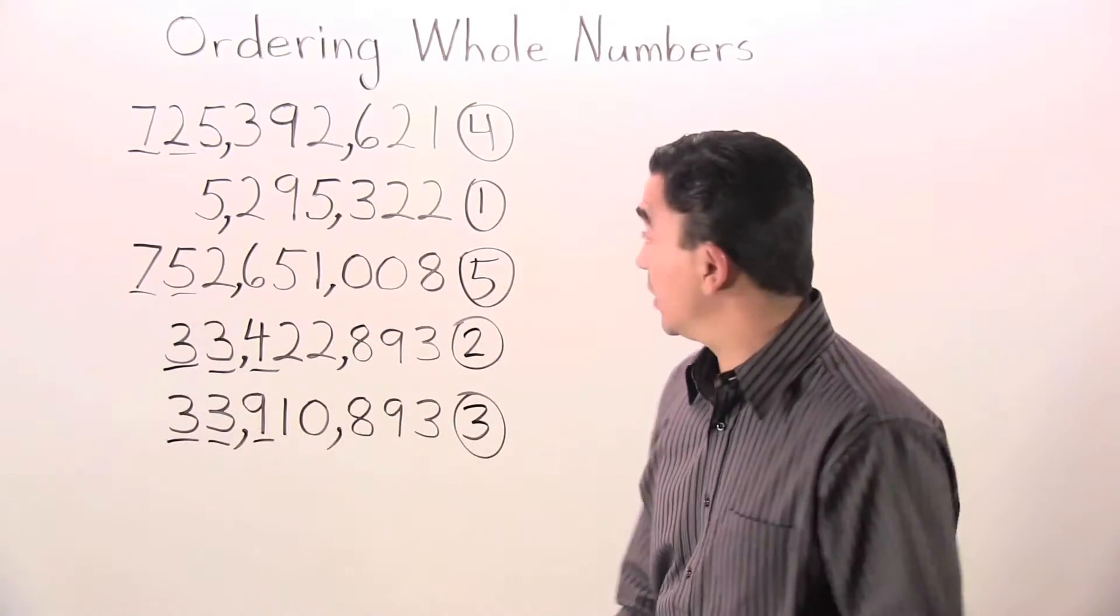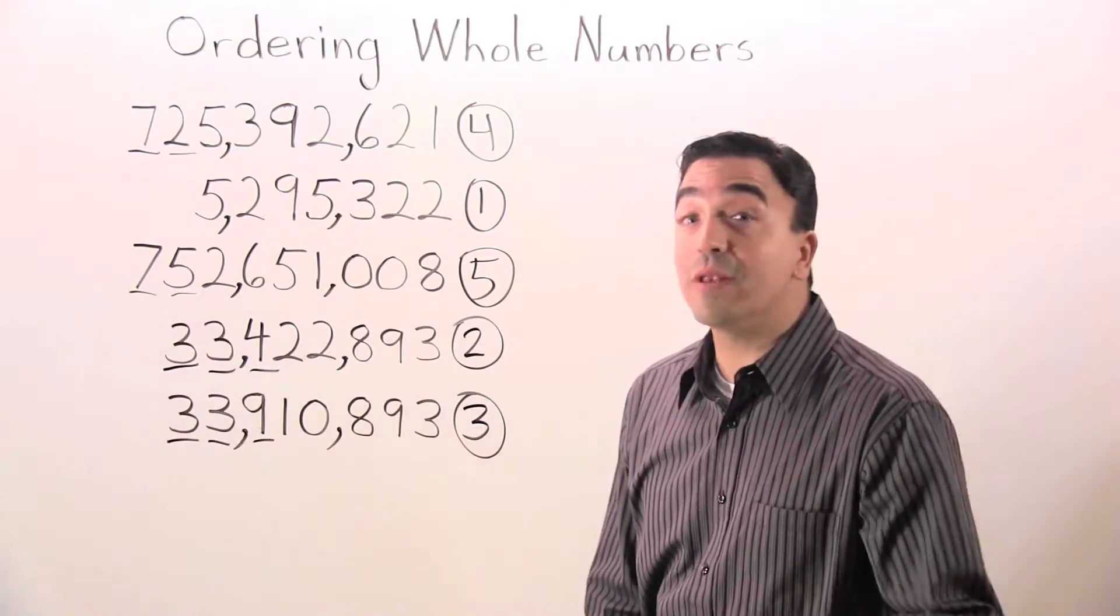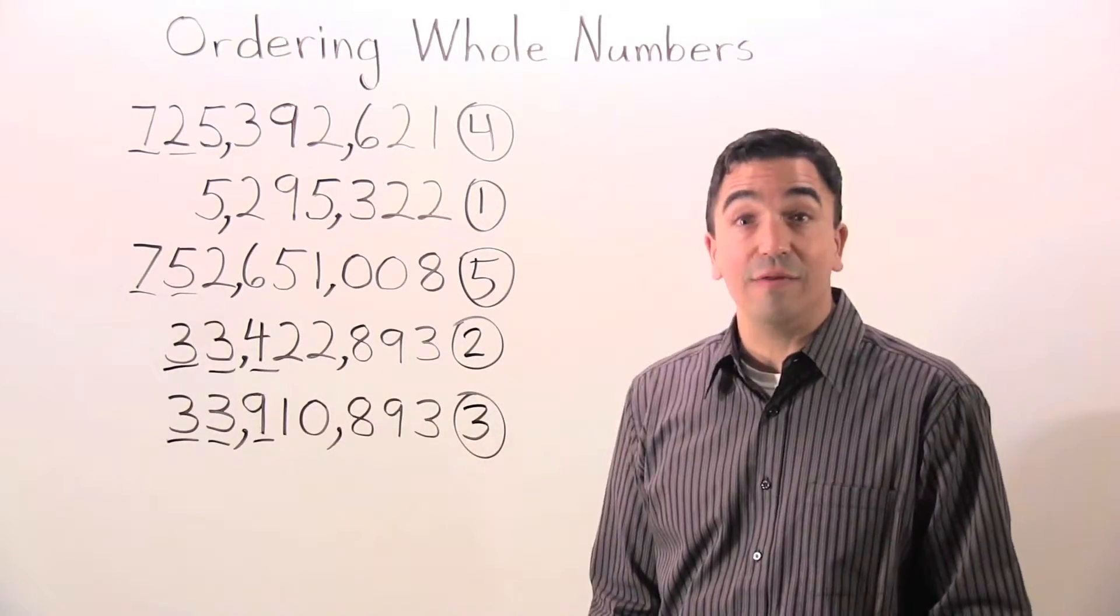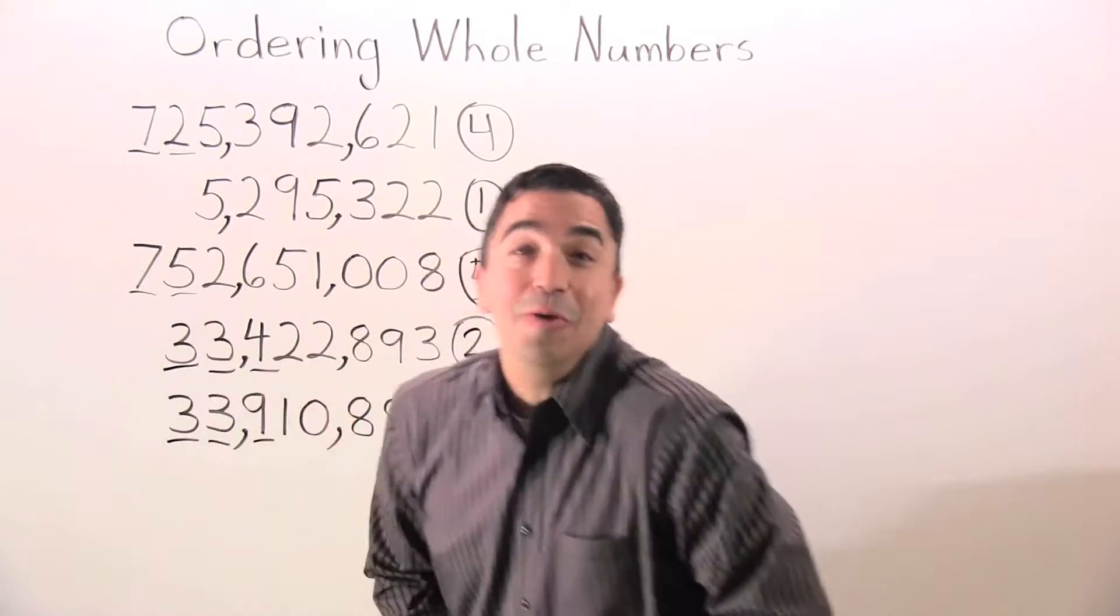Seven hundred fifty-two million, six hundred fifty-one thousand, eight is number five. Now we have them in order, one through five, from least to greatest.